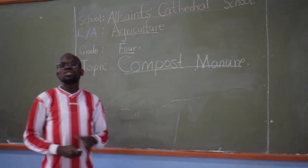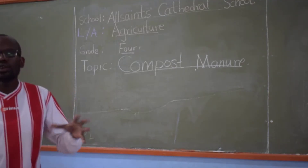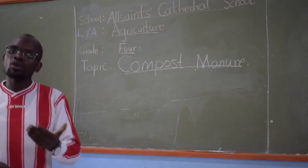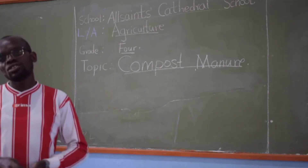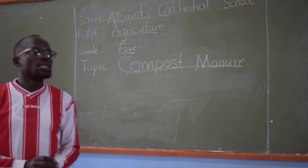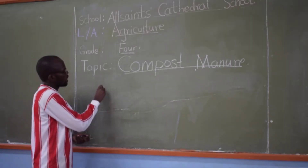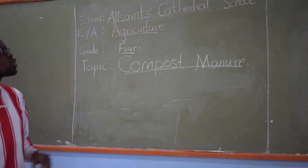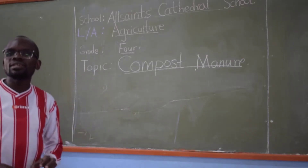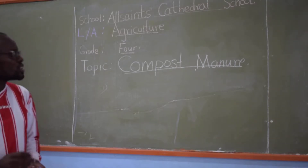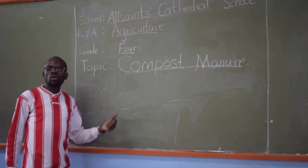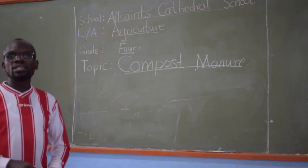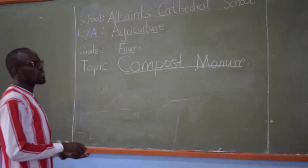In this lesson we are going to define what compost manure is, look at the arrangement of the materials required in making compost manure, and how to organize the material from the base to the top. Compost manure is made out of rotten plant and animal materials. We take plant material and animal waste, put them somewhere to rot — that is what compost manure entails. Let me come up with a simple structure.